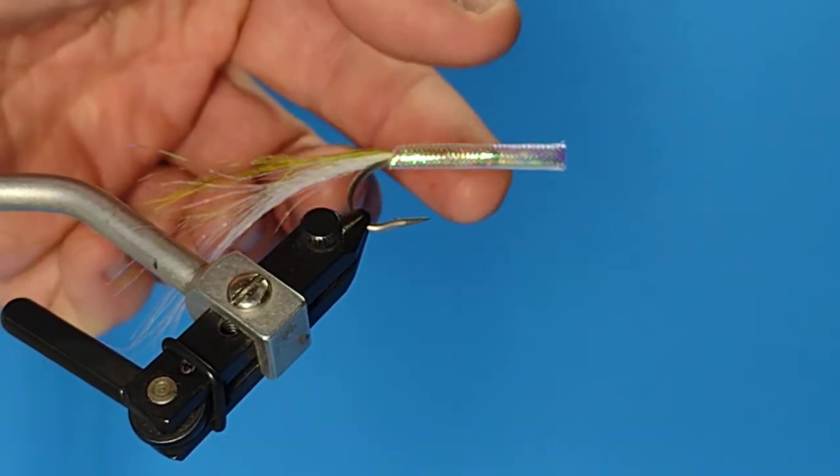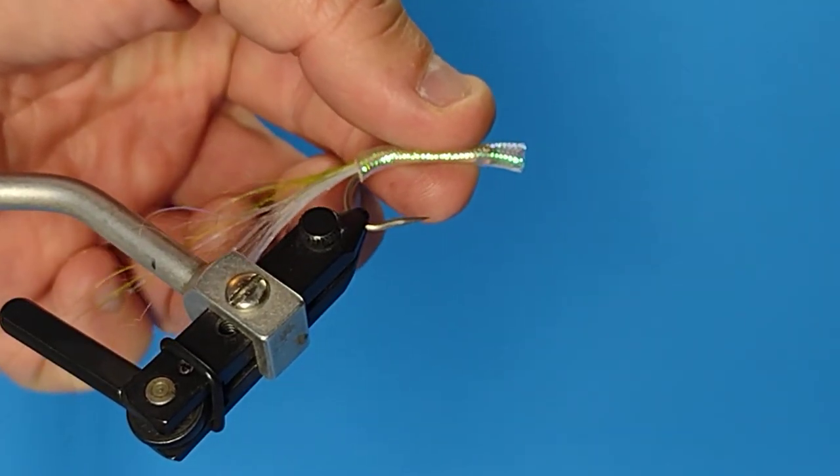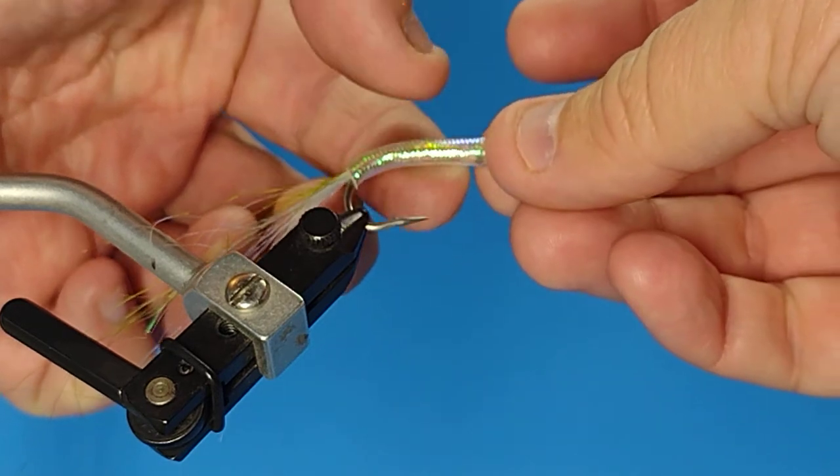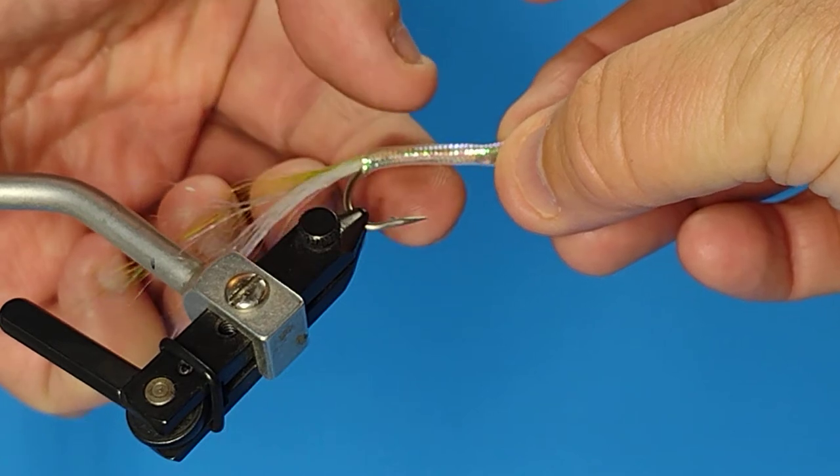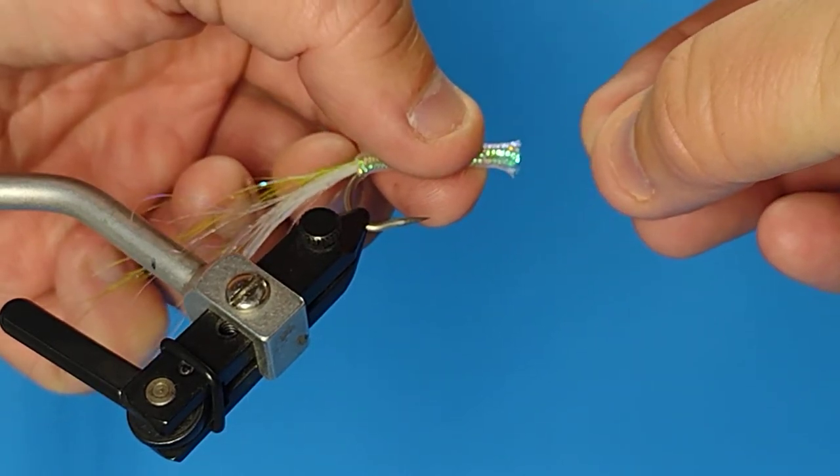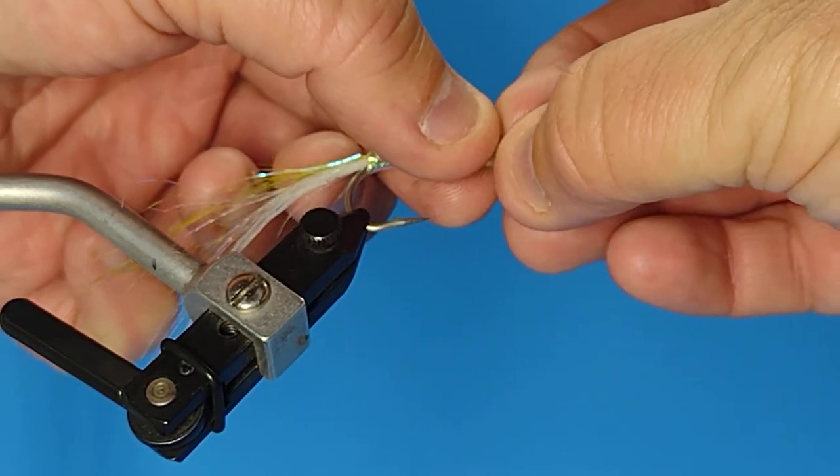And when I get back to where the hook starts to bend, I'm going to go past that bend a little bit. In this case, I've got some, maybe a little bit extra. You know, I'm going to compensate for that by cutting it again right here on the hook.